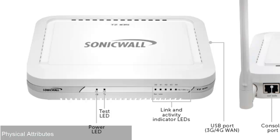For the physical attributes of the SonicWall TZ-105 appliance, on the front we've got a power LED, a test LED, and then a bank of LEDs that'll show us our Ethernet connectivity as well as the activity happening on those interfaces. On the right-hand side, the TZ-105 supports a USB, 3G, or 4G modem that can be used as a separate WAN connection.